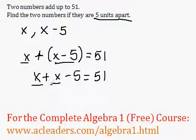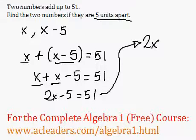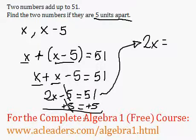Now, x plus x is 2x. We can add 5 to both sides of the equation. And by doing that, I'm getting rid of the 5 on this side. 51 plus 5 is 56.